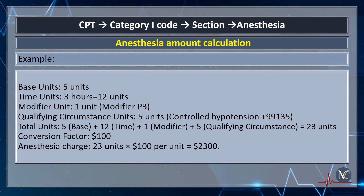In this example, the base unit has a value of 5. Time units for the 3 hours have a value of 12. The modifier unit for P3 has a value of 1. The qualifying circumstance unit has a value of 5, which corresponds to code 99135. The total units value after adding these values is 23 units. After multiplying 23 units by the Conversion Factor of $100, the answer is $2,300.